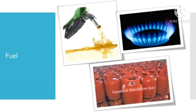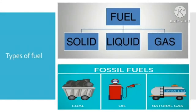Now we will learn about fuel and its types. Any substance that can produce heat and energy on burning is called fuel. We use this heat for various purposes such as cooking, heating and many industrial and manufacturing purposes. Some of the fuels that we use in our daily life are wood, coal, petrol, diesel and natural gas. Fuels are classified into different types according to their physical state. They are classified into solid, liquid and gaseous fuels.